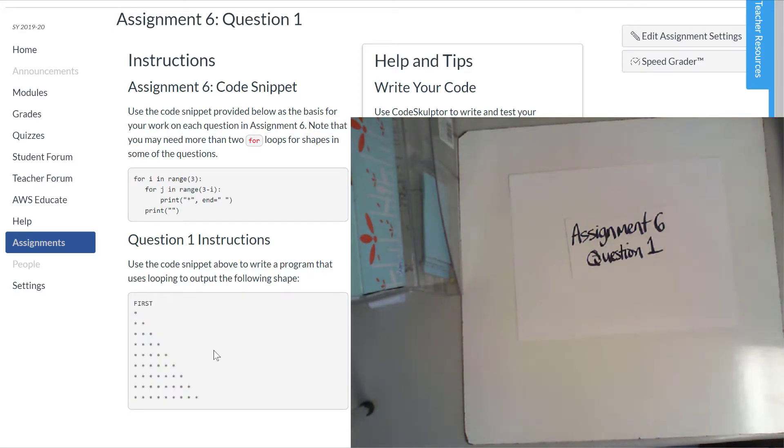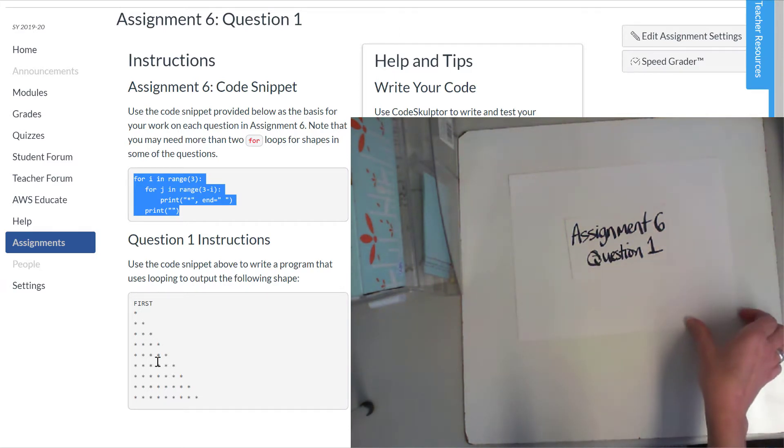So the reason why you have to write the word first on the first line is because it is the first question. So now let's understand what each of these lines of code means and then you'll be able to customize it so that you'll get this picture and then the second one is a big rectangle, third one is an upside down rectangle, and stuff like that.